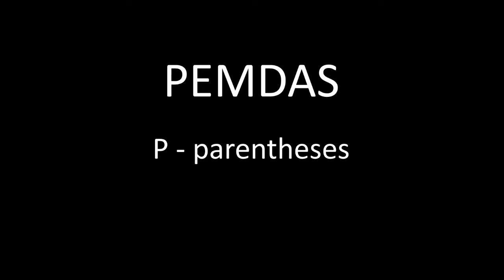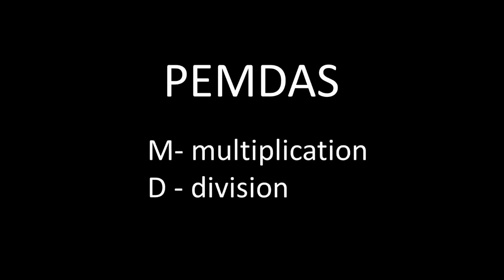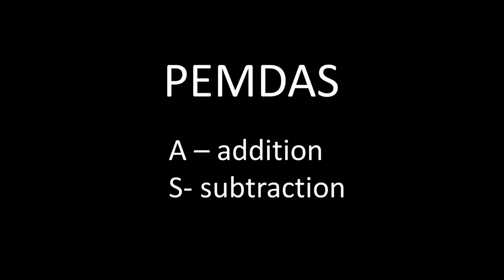It tells you the order to perform operations when you have more than one in your expression. P stands for parentheses, which are equivalent to braces and brackets. When there are multiple parentheses, we work from inner parentheses to outer, then left to right. E stands for exponents. M and D are multiplication and division. They have the same rank in PEMDAS and are executed from left to right. And A and S are for addition and subtraction. They also have the same rank and are done from left to right.